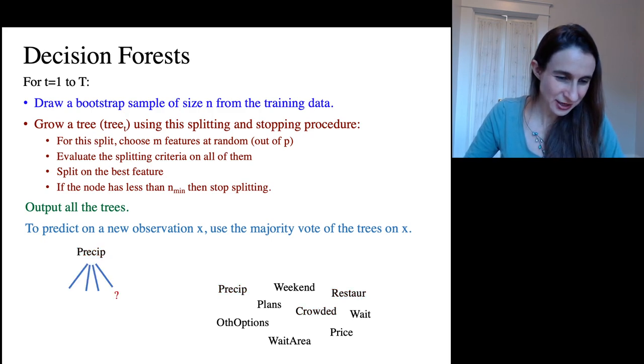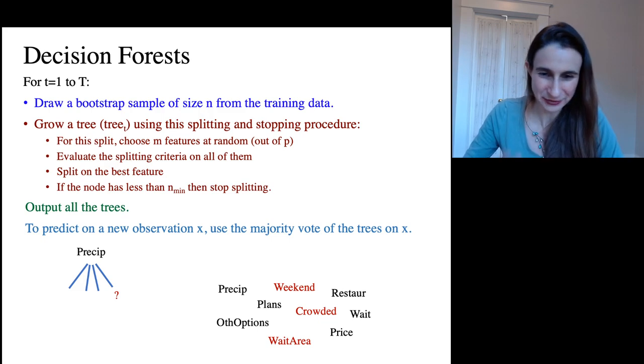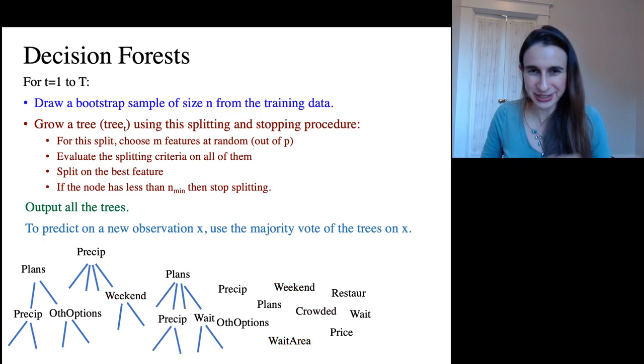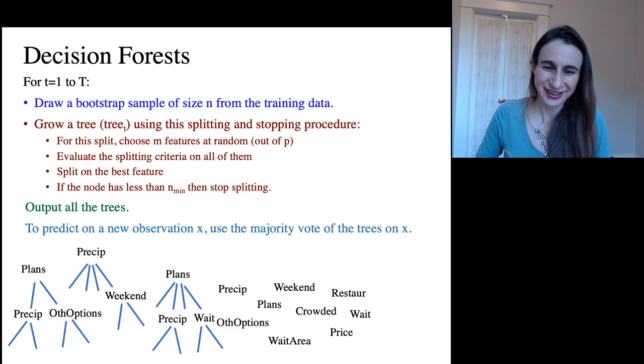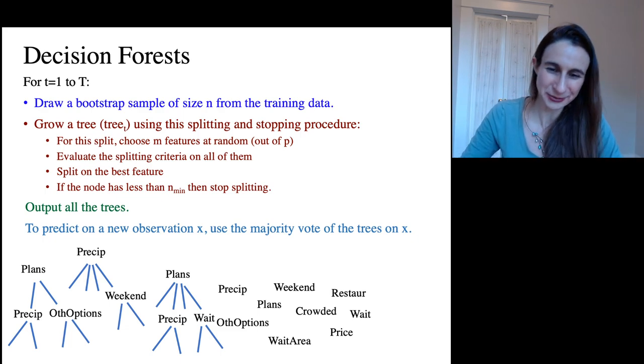And then for this split we would consider maybe a different set of features. And then we evaluate all of them and we pick the best one and we split on that. And then we do this, we create a whole bunch of trees. They're all overfitted to the data, and that was our goal there. And we average or take the majority vote of the prediction.